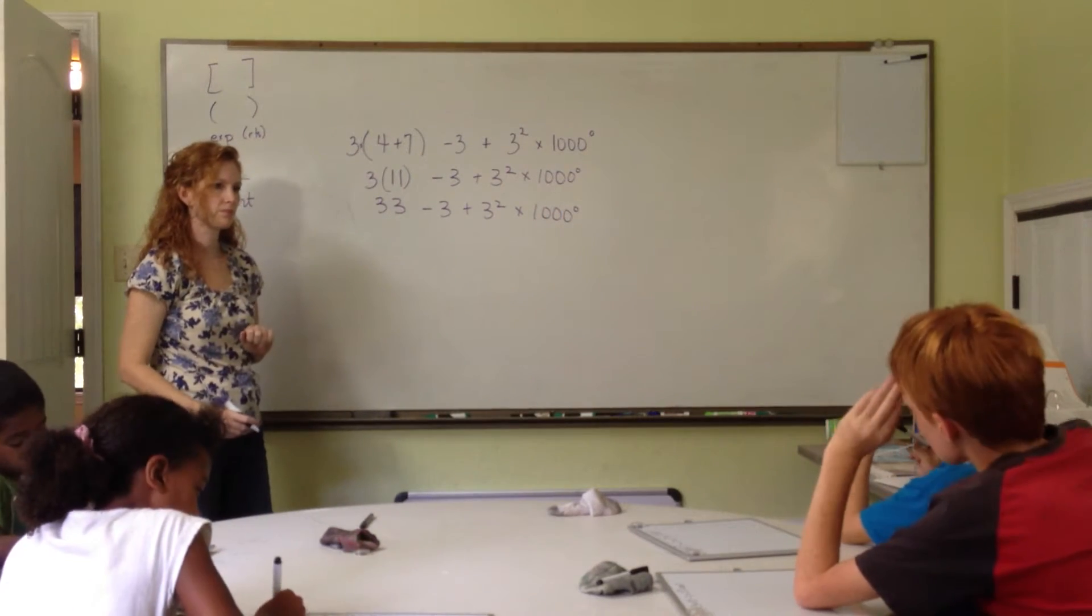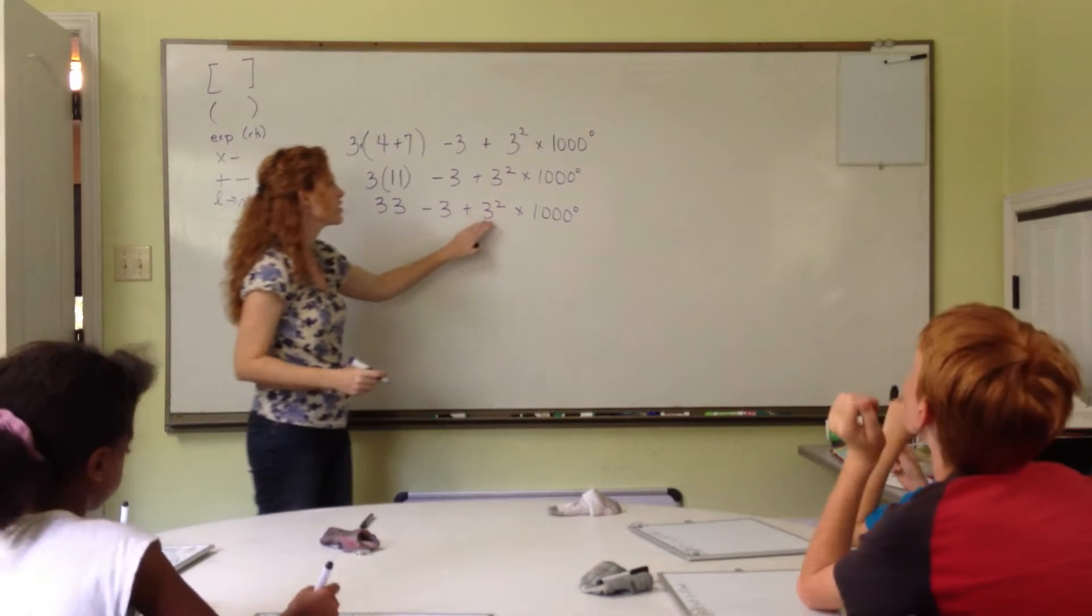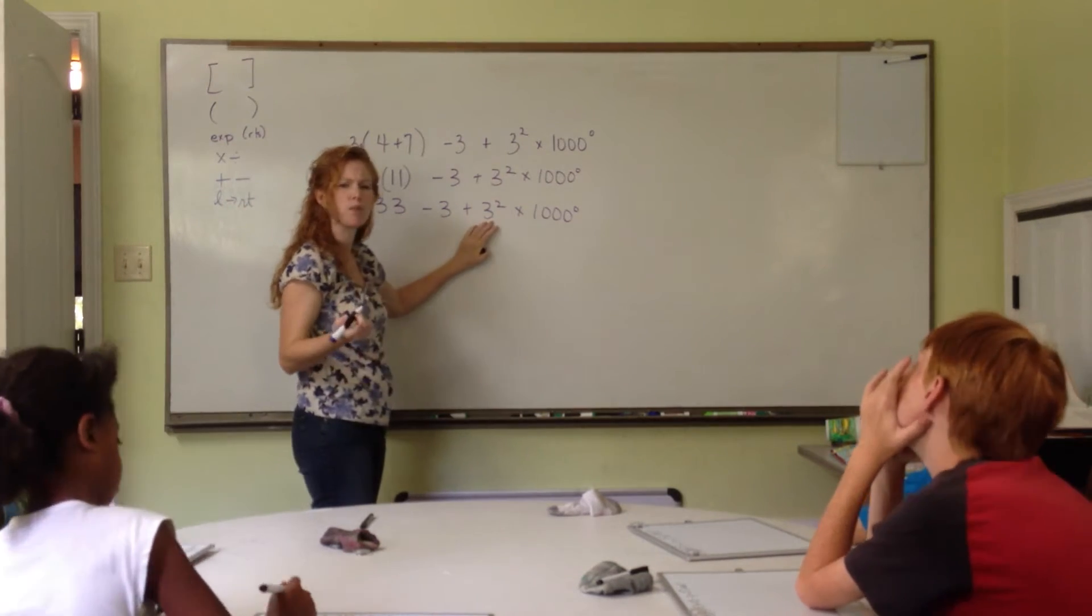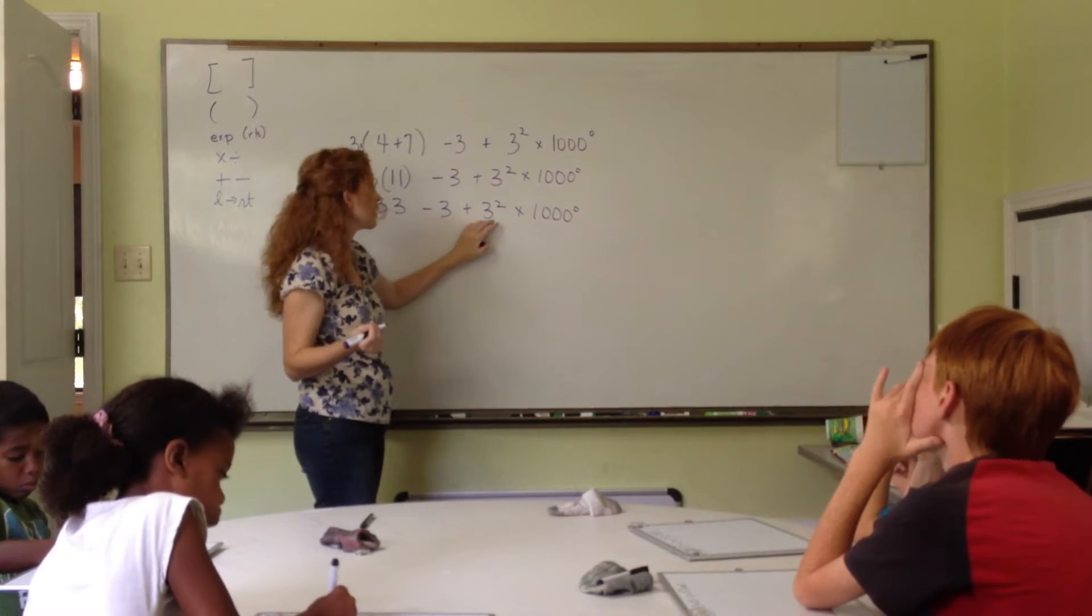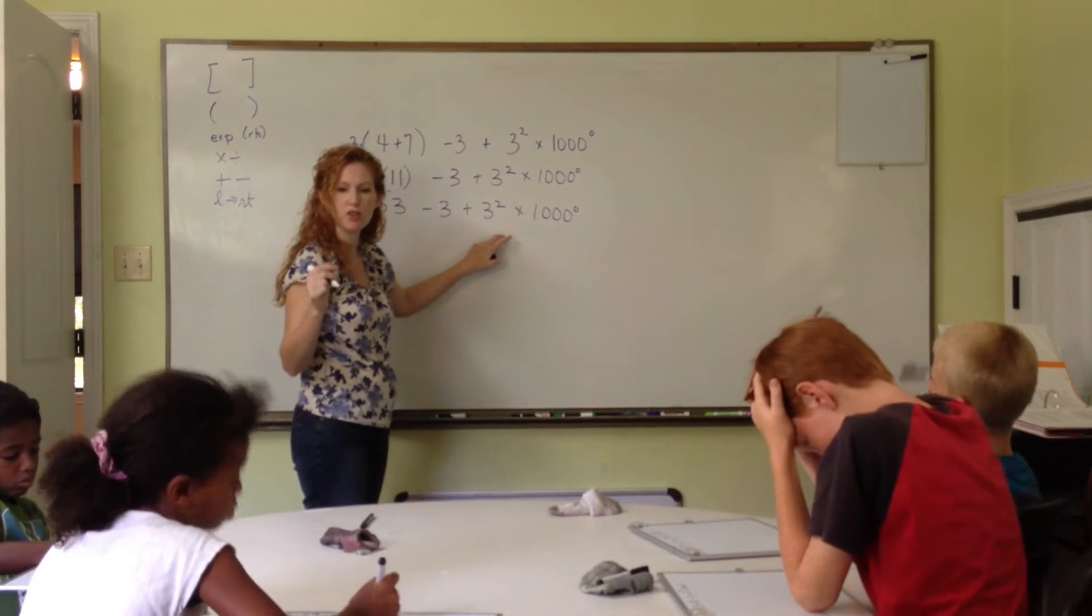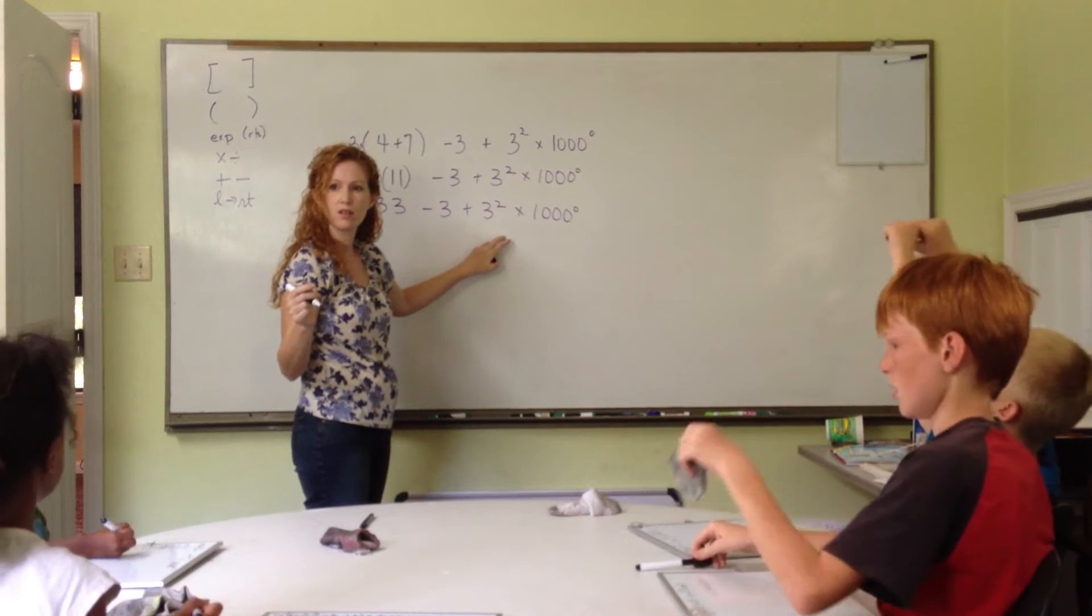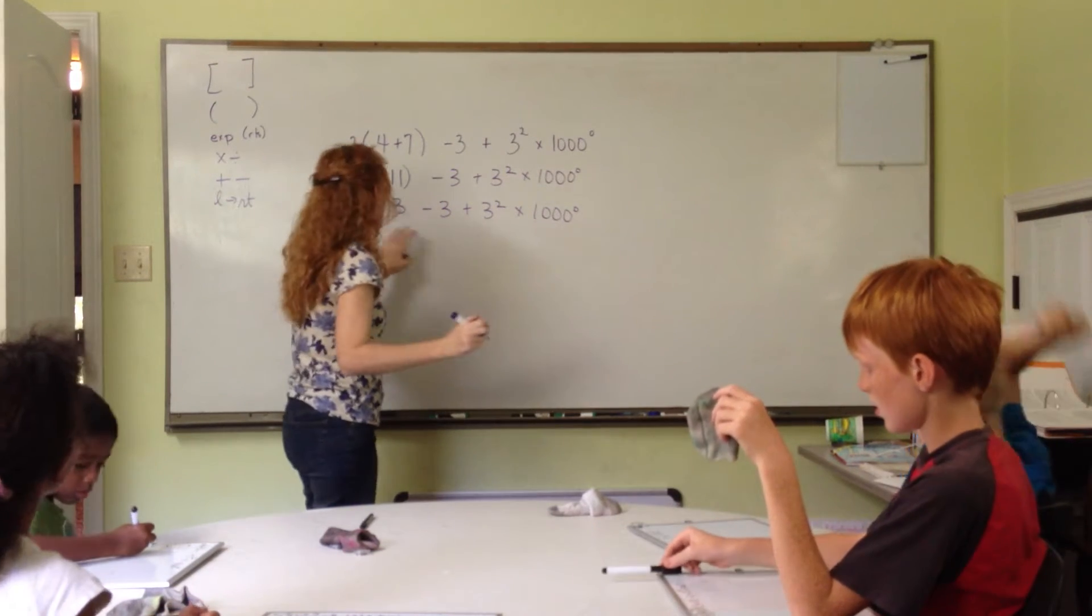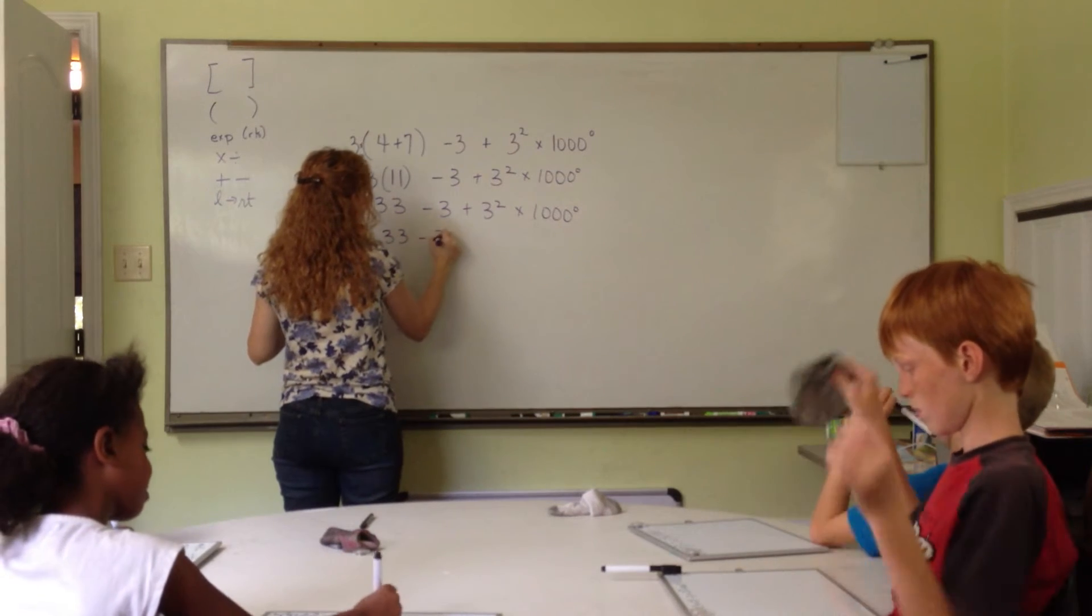Okay, what are we going to do next? Three squared and 1,000 to the 0 power. All right, so what is, what's three squared? What does three squared mean? Three times a number times itself. Right. So, three squared means three times three. Aubrey, what's three times three? Three times three, I think, is 18. No. Three times three is nine. That's right.